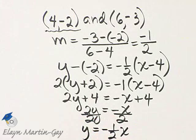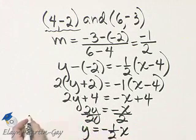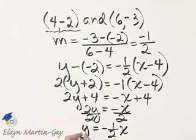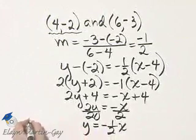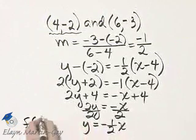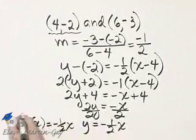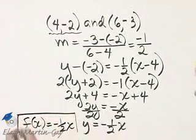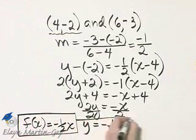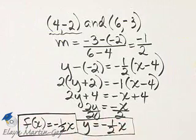And now we will write it using function notation. I will write it instead of y, I'll call it f of x, is equal to negative one-half x. These are both the same, it's just that here I'm using function notation. f of x is equal to negative one-half x.